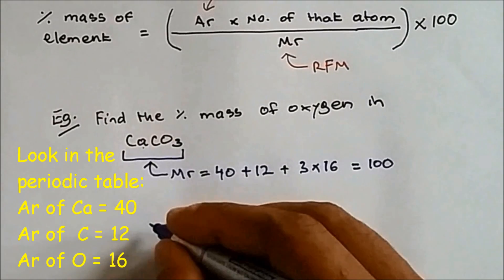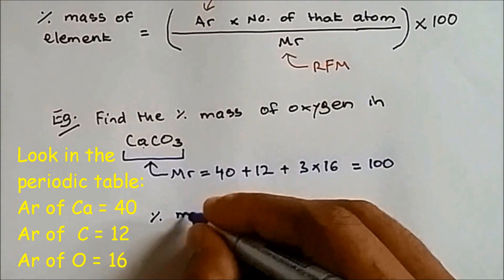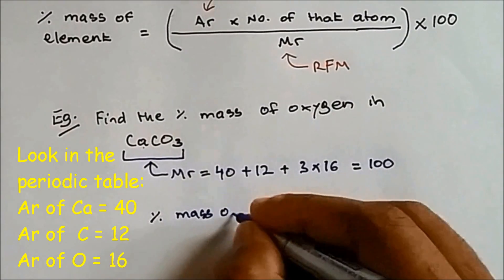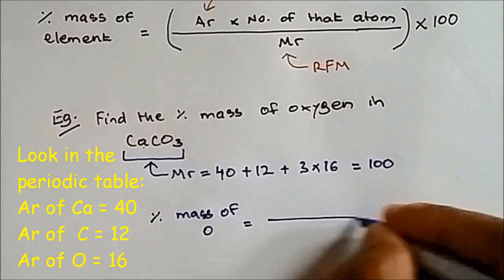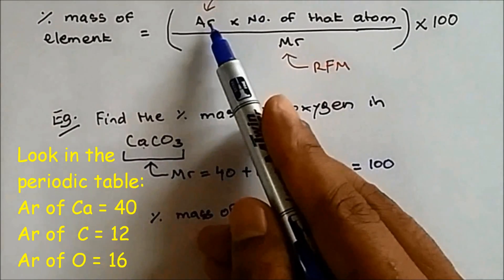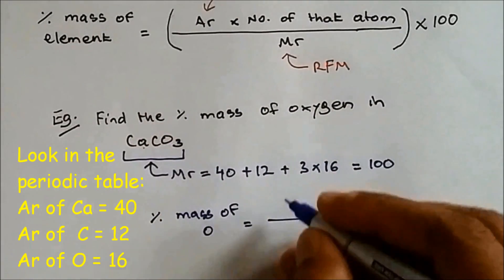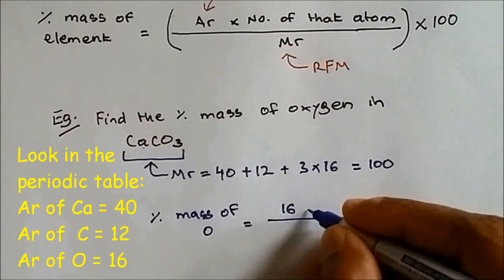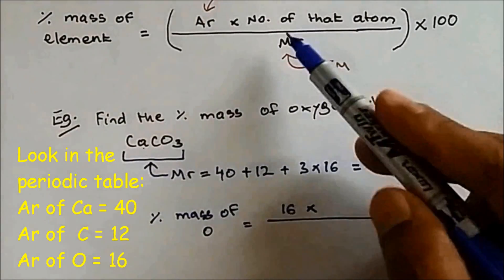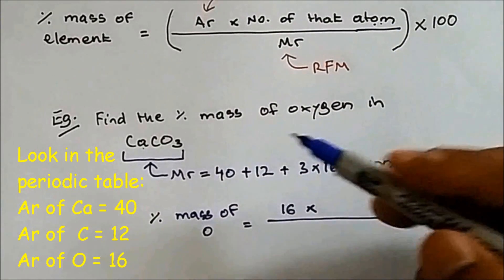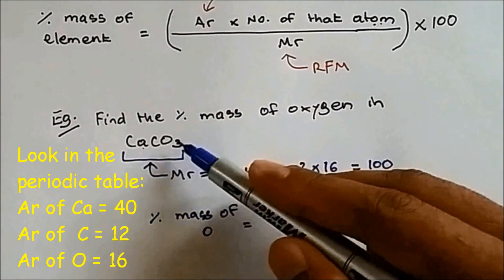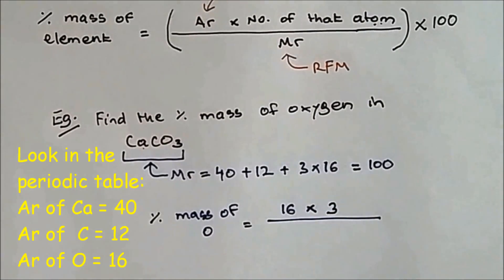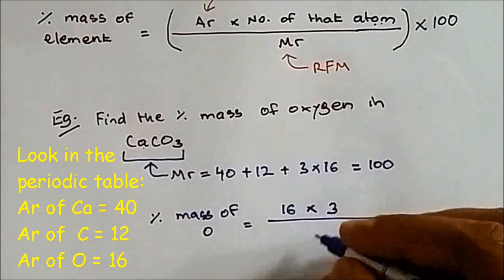So percentage mass of oxygen. What's the AR of oxygen? 16. Number of that atom: there are 3 oxygen, so we write 3. And the MR is 100.